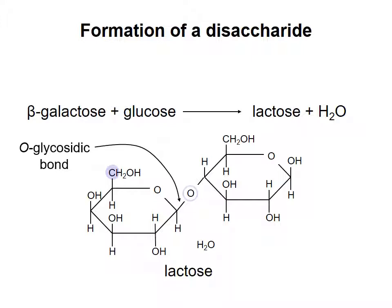When the anomeric carbon is involved in an O-glycosidic bond, the ring containing that anomeric carbon can no longer open and close. Therefore, the monosaccharide group is stuck or frozen in the anomeric configuration it was in when the bond was made. So in the disaccharide lactose, the galactose sugar is always in the beta configuration.